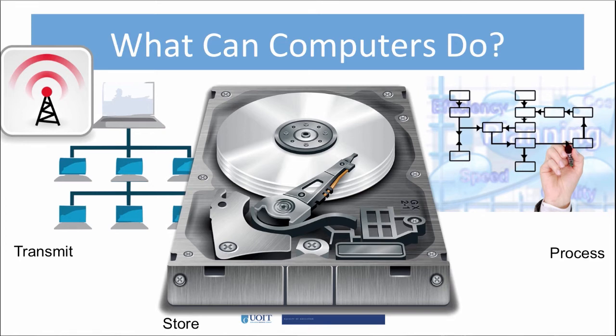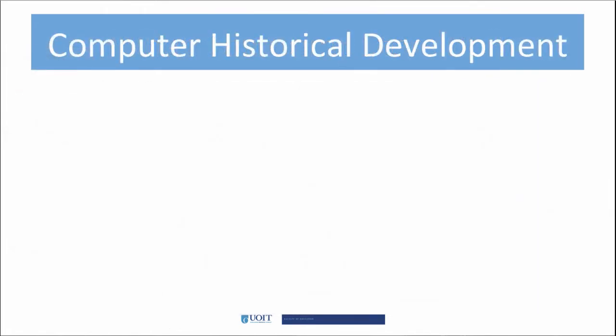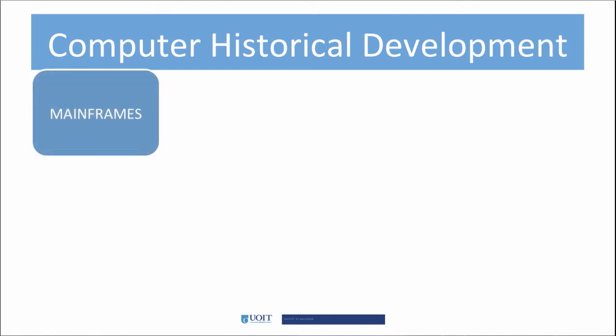On the basis of these characteristics, computers and other digital technologies have developed over the past decades. The next few slides will provide a brief overview of the historical development of digital technologies. The developmental history of digital electronic computers can be categorized in three main eras, each with their own particular characteristics. The first era is mainframes, characterized by rudimentary interfaces, rudimentary networks, and standalone programs — these were used by large corporations only.